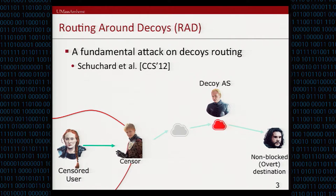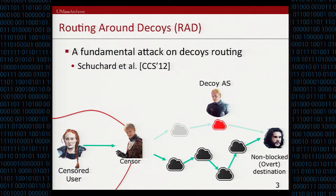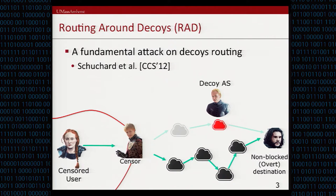The censor changes the routing policy so that the user's traffic takes another route which is free of decoy autonomous systems. This alternative route enforced by the censor could potentially have lower quality of service, be longer, or even be more expensive — for example, going through a provider autonomous system as opposed to a peer autonomous system. So the censor has to spend money or lower quality of service in order to bypass the decoy routing system.